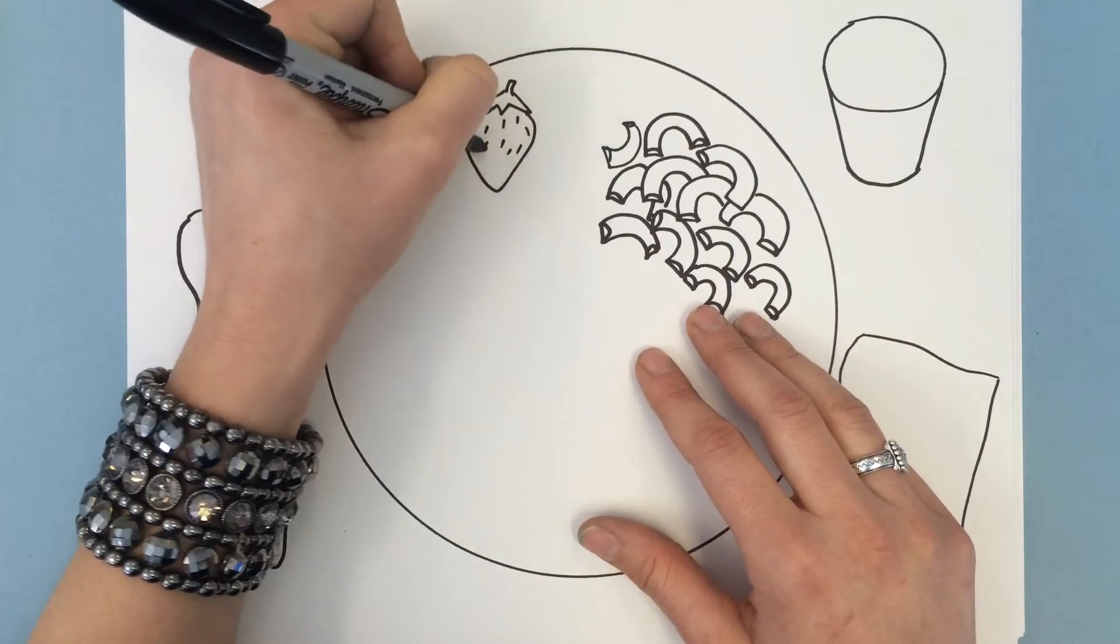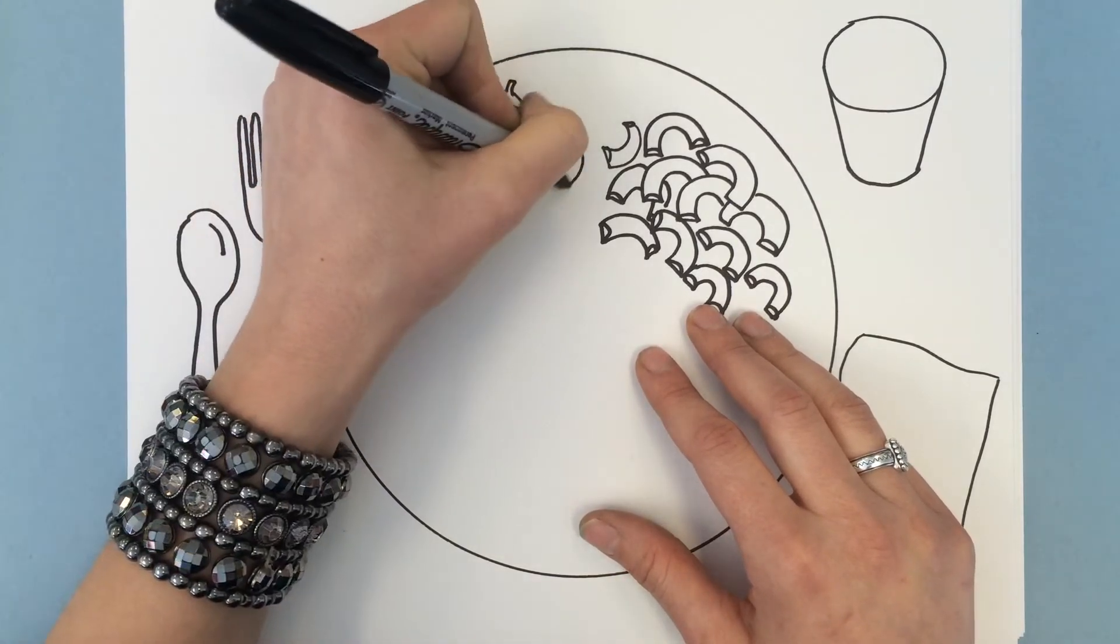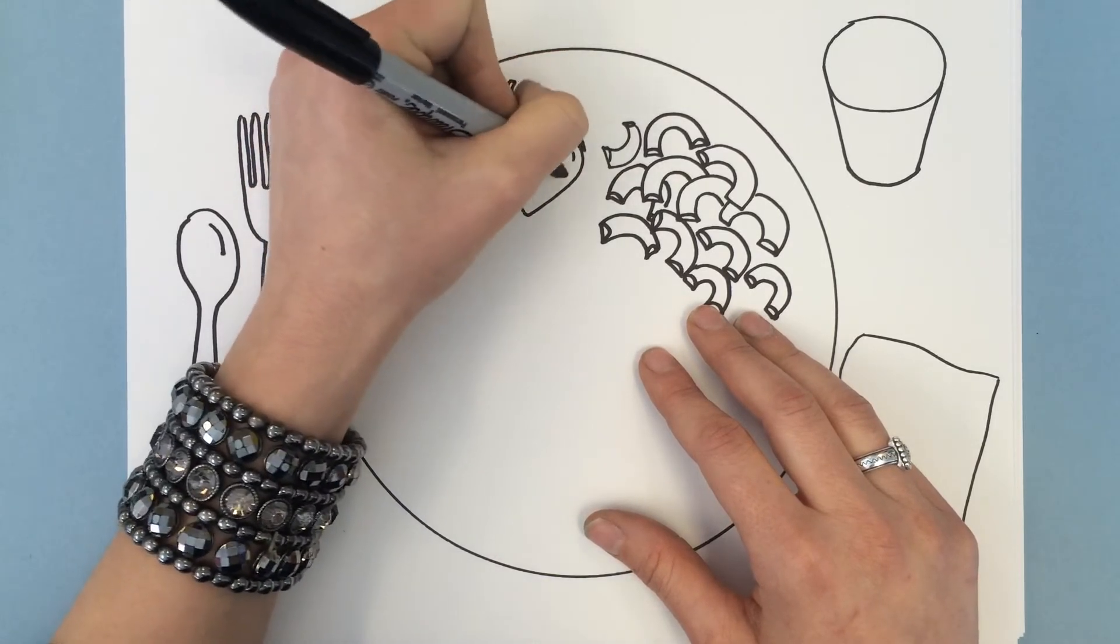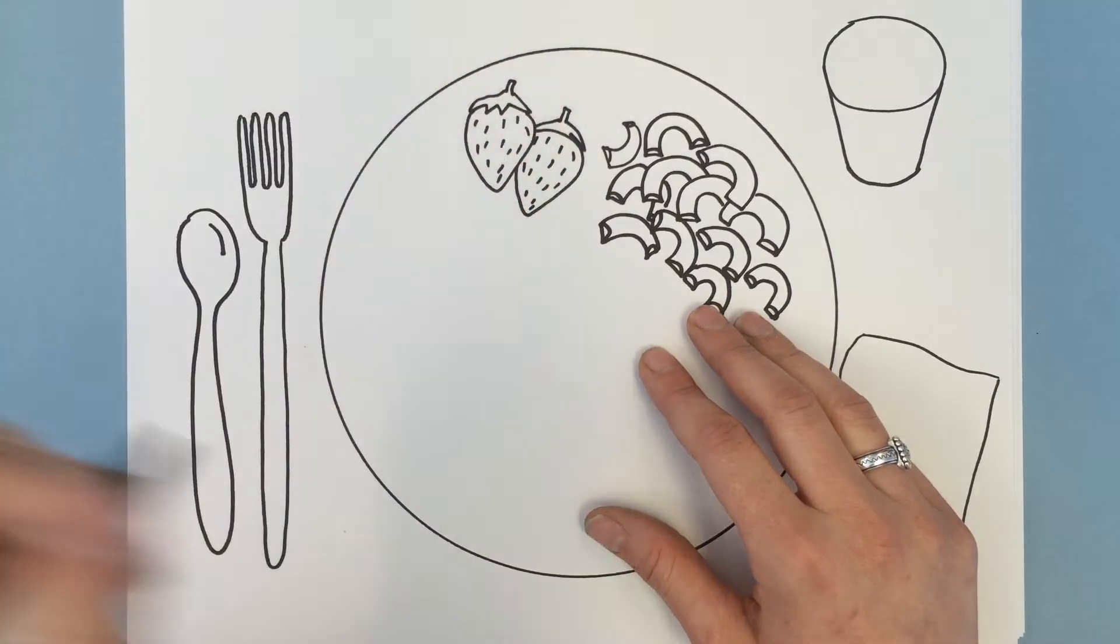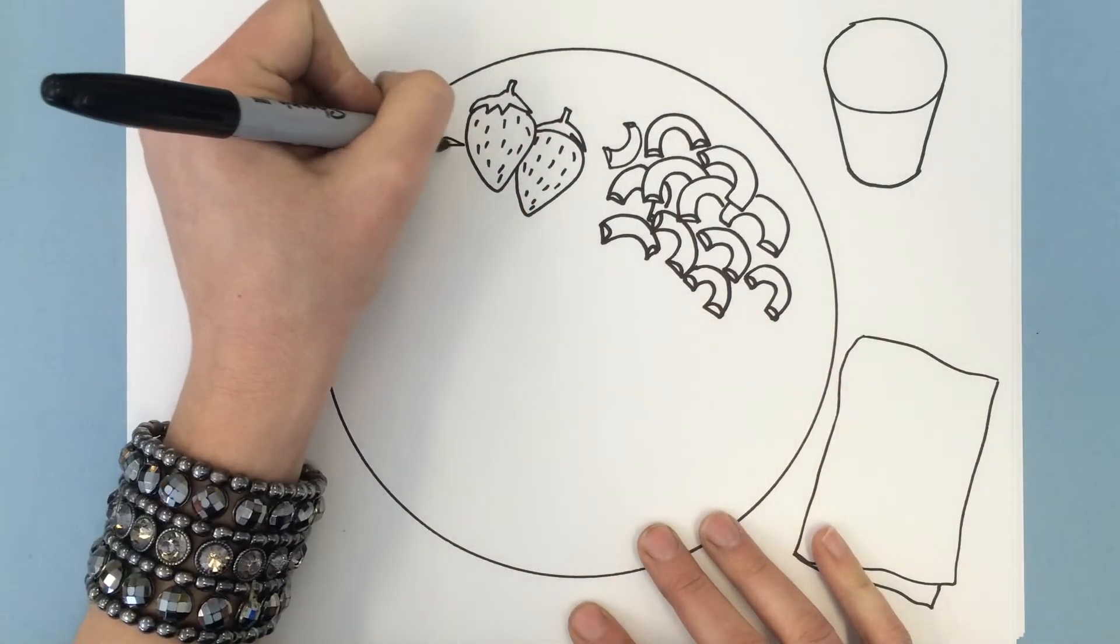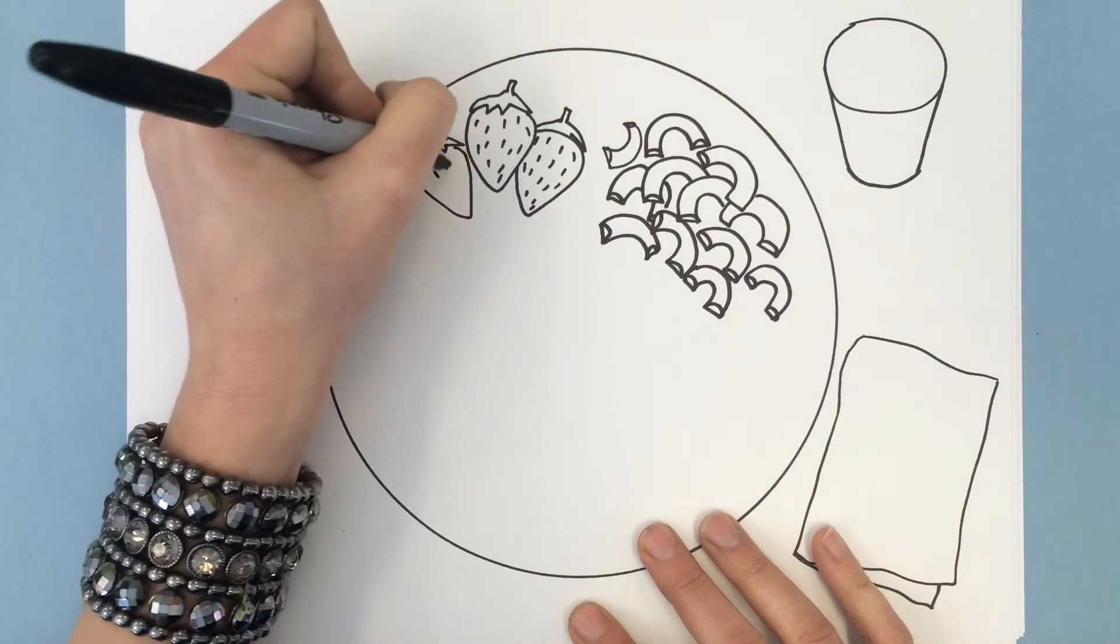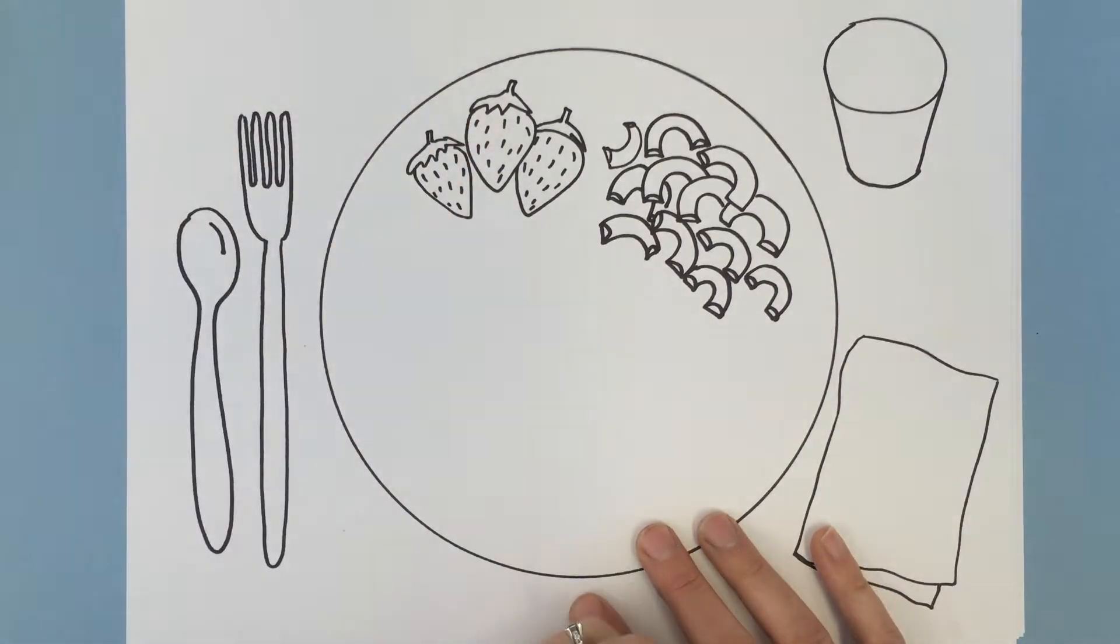Now this is a plate of your favorite foods. Normally you probably wouldn't eat all these foods together in one sitting. You might eat strawberries as a snack and you might eat macaroni at another time. Maybe for supper or for lunch.